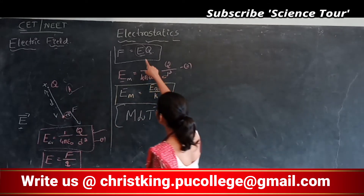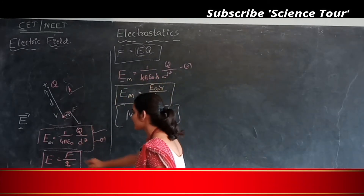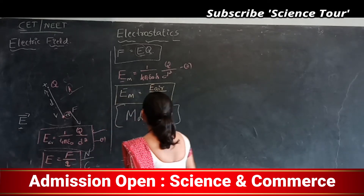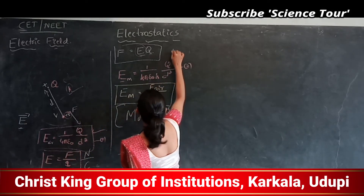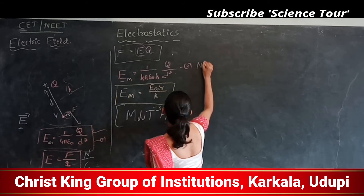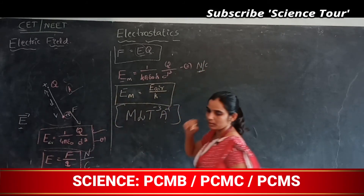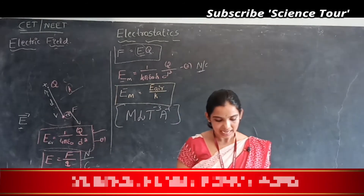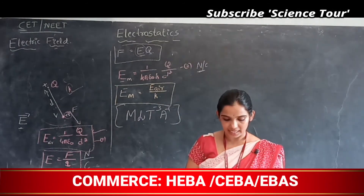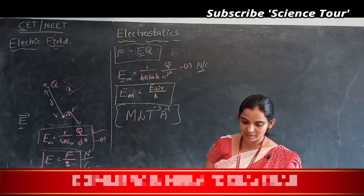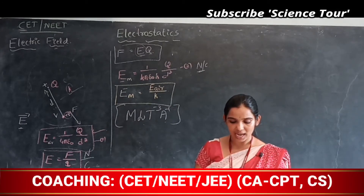The SI unit of electric field intensity is Newton per coulomb, since force is in Newtons and charge is in coulombs. Electric force is independent of mass and velocity of the charged particle; it depends only on the charge.